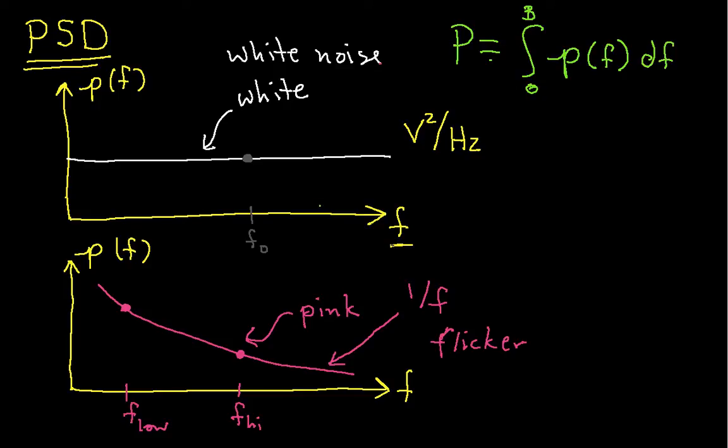If I want to know the power in the noise, starting at a frequency of 0 and going up to b in the white noise, it's basically the area under this curve. And that area would be the power due to noise between 0 and b hertz.